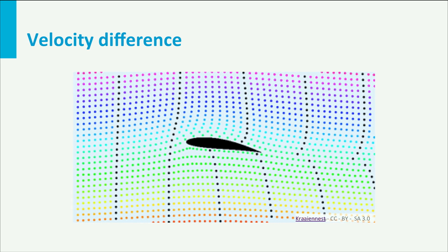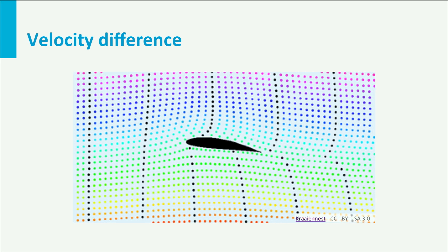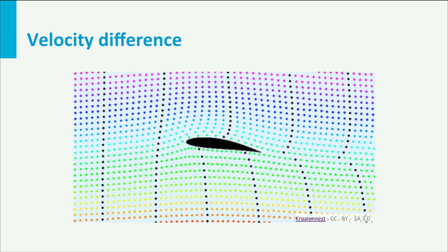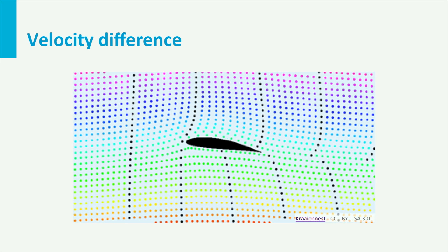The flow that will pass over the airfoil upper surface is already busy speeding up. Due to the shape of the airfoil, the flow along the upper surface moves faster than along the lower surface.